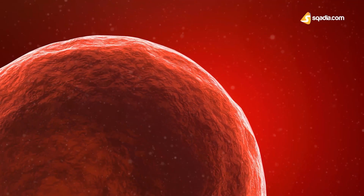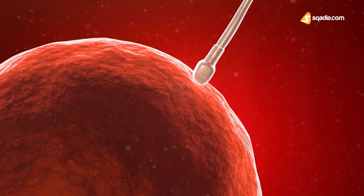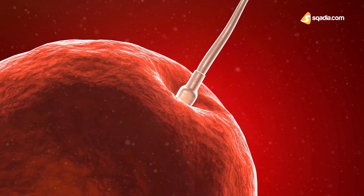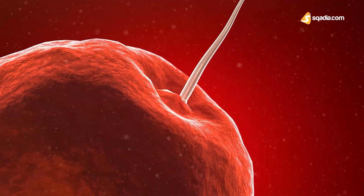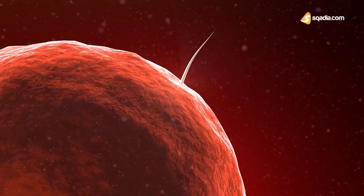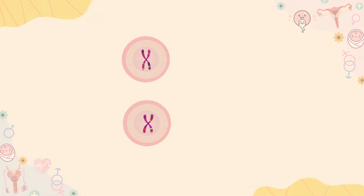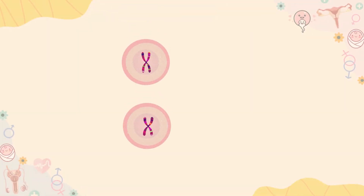The whole process that results in the birth of a baby starts with an egg and a sperm. Each egg carries one X chromosome, while sperm carries either an X or a Y chromosome.